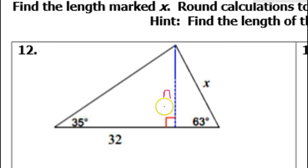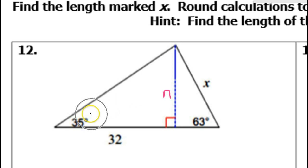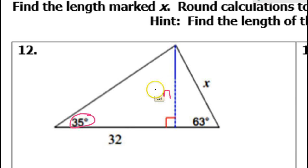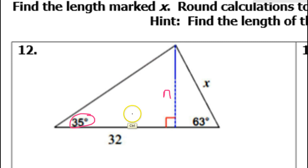I'm going to find N first. Focusing on the left side of the triangle, I've got this angle — the 35 — and then I've got these two sides. Are either one of these the hypotenuse? No, the hypotenuse is over there. So the 32, is this opposite or adjacent?